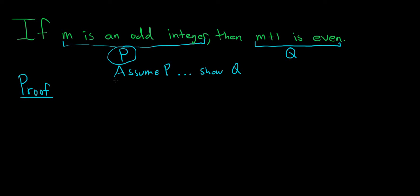You start by saying suppose that, and I'll just take it verbatim from the question, that m is an odd integer.